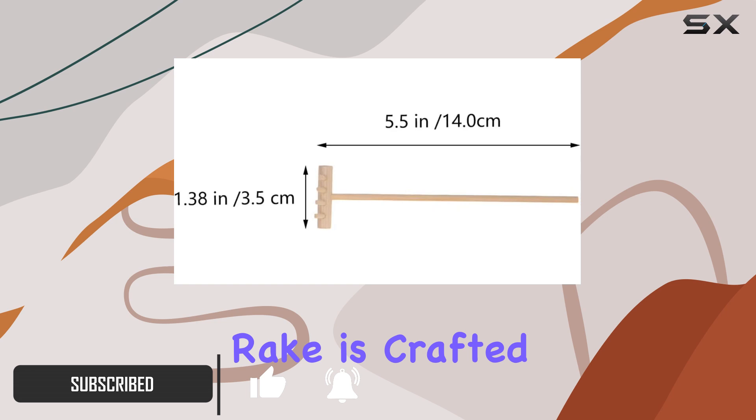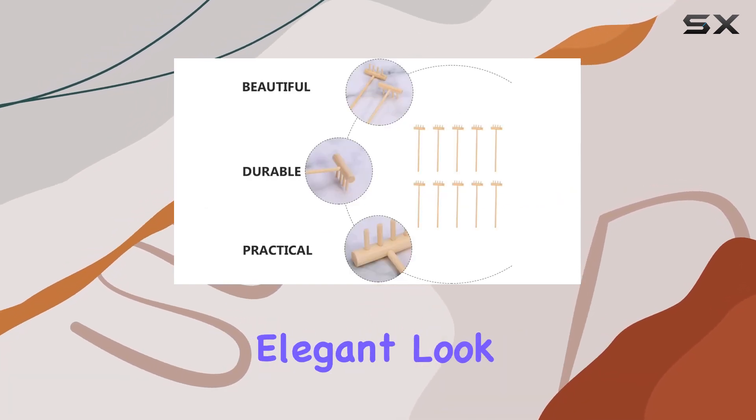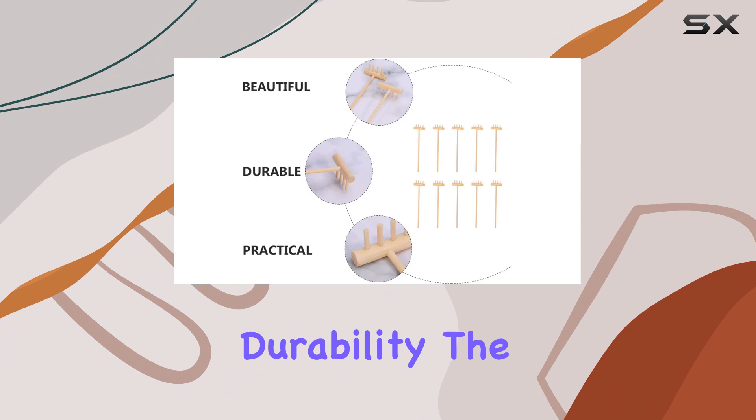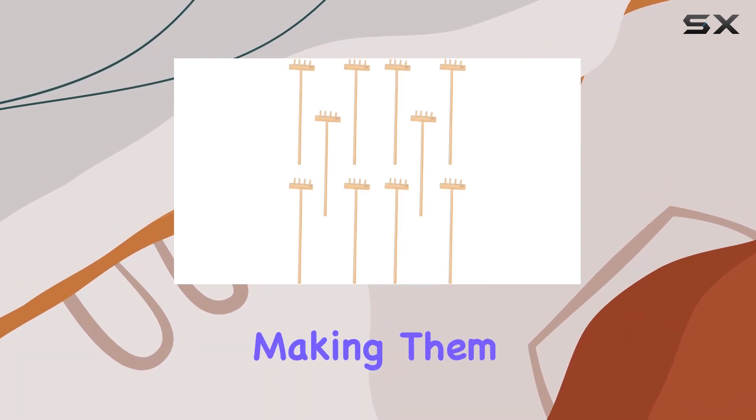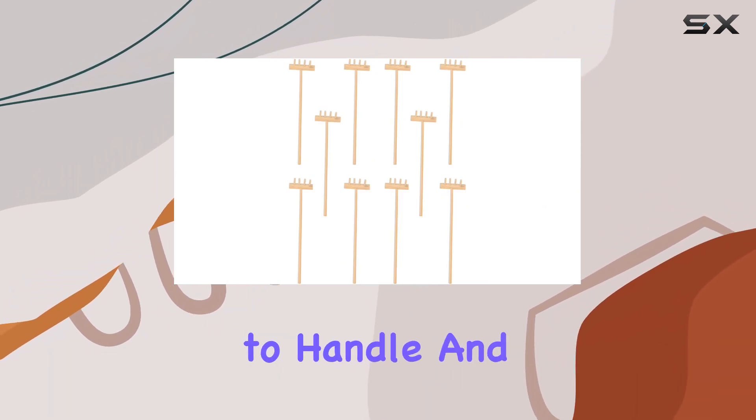Each rake is crafted from bamboo, which gives them a natural, elegant look while ensuring durability. The rakes are designed to be lightweight, making them incredibly easy to handle and store.